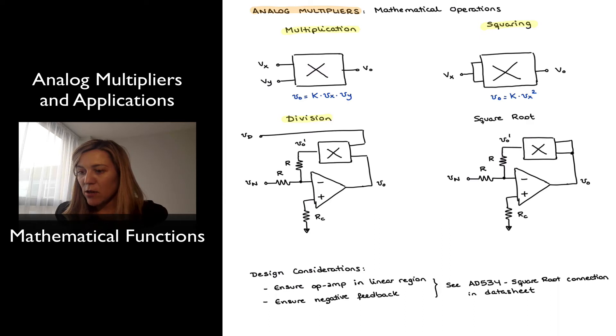And so in this case, we can see that what I've labeled as vout prime, the output of the analog multiplier, is going to be equal to the multiplication of vout times the denominator voltage times a proportionality constant. So k times vout times vd, which will be, as we shall see, the denominator voltage.